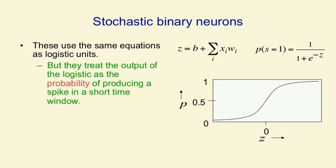Of course, if the input is very big and positive, they will almost always produce a 1. And if the input's big and negative, they'll almost always produce a 0.